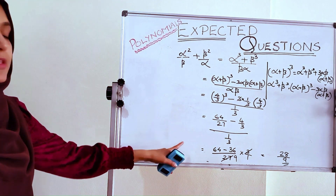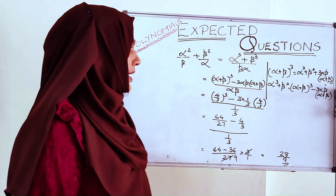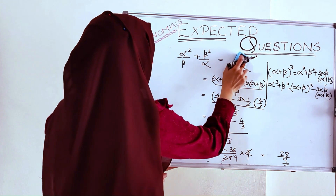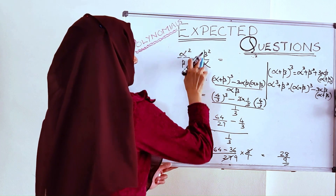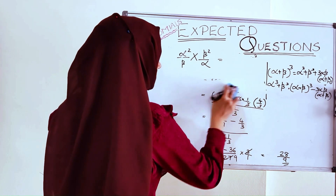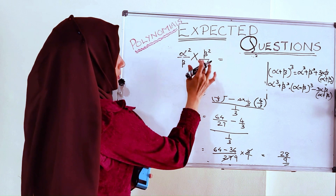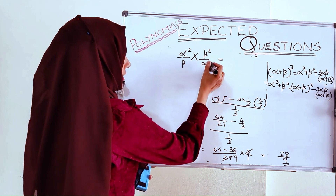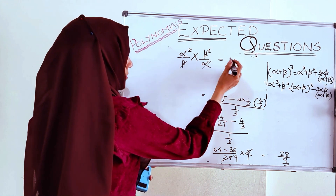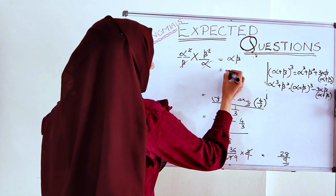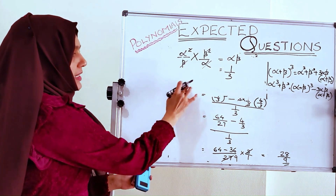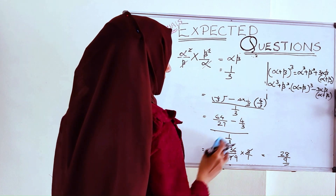So we got the sum of the new zeros as 28/9. Now let us find the product of the new zeros. The product is (α²/β) × (β²/α) = α²β² / αβ. Here α and α² cancel one α, and β and β² cancel one β, giving us α × β = 1/3. So the product of the new zeros is 1/3.